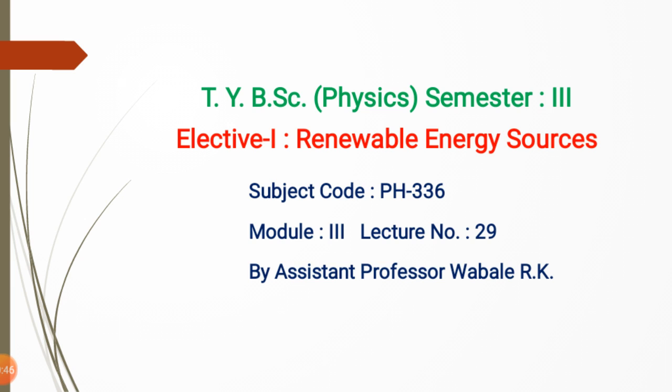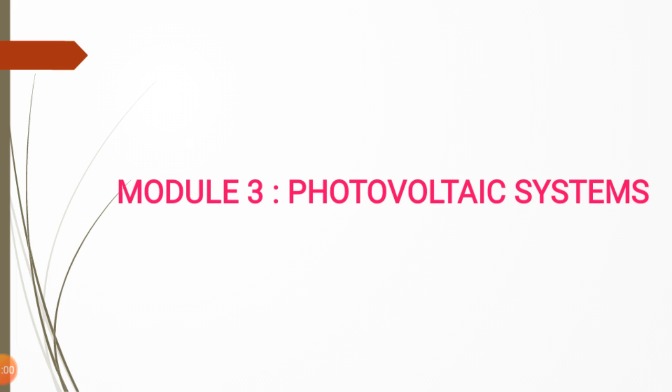The second classification is based on material — the semiconductor material used for construction. For example, silicon gives us a silicon solar cell, while gallium arsenide or cadmium sulfide are also semiconductor materials used for solar cell construction, and the solar cell is named accordingly.